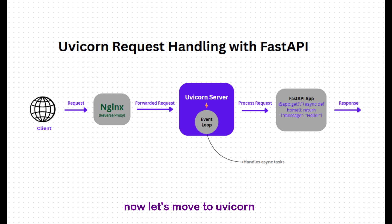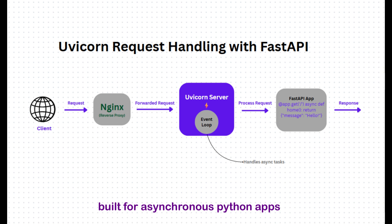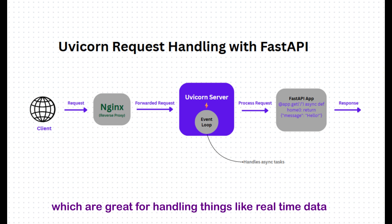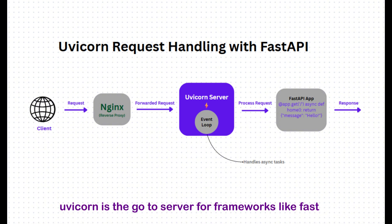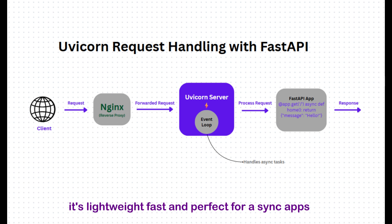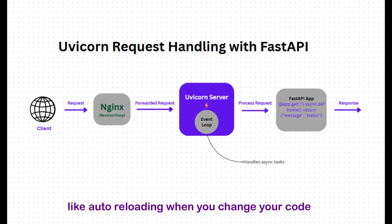Now let's move to Uvicorn. Uvicorn is an ASGI server, where ASGI stands for Asynchronous Server Gateway Interface. This is a newer standard built for asynchronous Python apps, which are great for handling things like real-time data or web sockets. Uvicorn is the go-to server for frameworks like FastAPI or Starlette. It's lightweight, fast, and perfect for async apps, but it's often used in development because it has features like auto-reloading when you change your code.